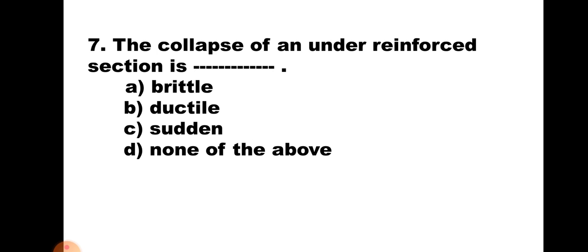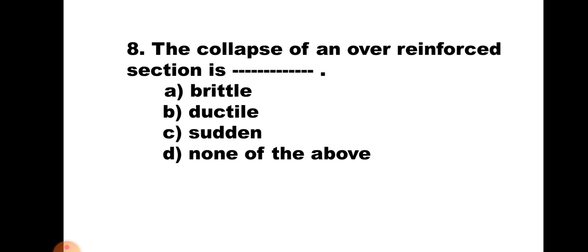Question number 7: The collapse of an under-reinforced section is: A. Brittle, B. Ductile, C. Sudden, D. None of the above. In under-reinforced sections, the steel reaches its ultimate strain first. Steel being ductile, cracks are developed and deflection is observed, which gives early intimation of the impending failure. The collapse is of ductile nature. Hence, the correct answer is B. Ductile.